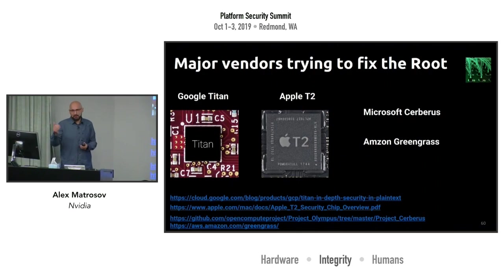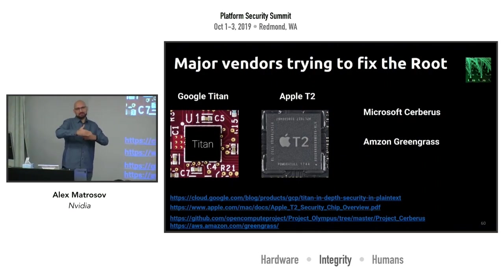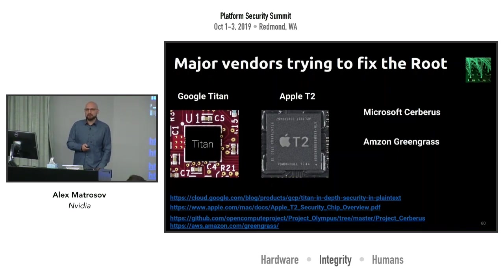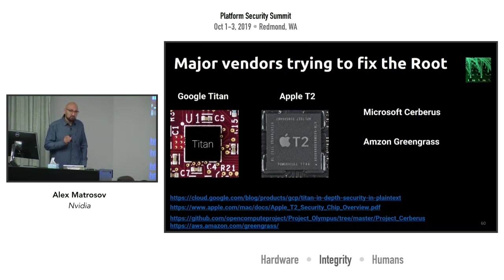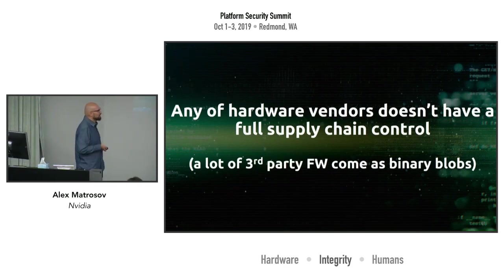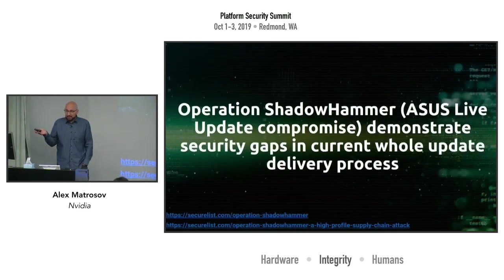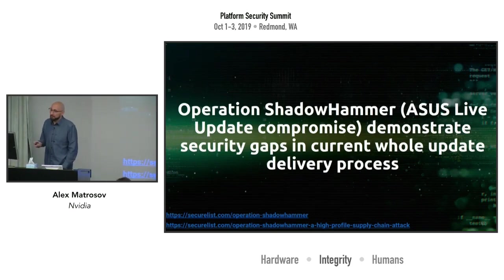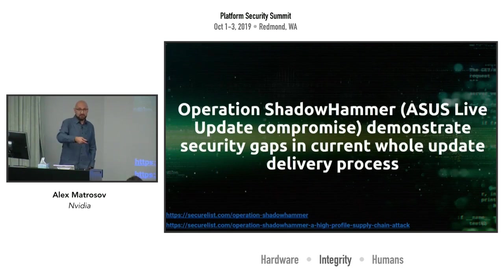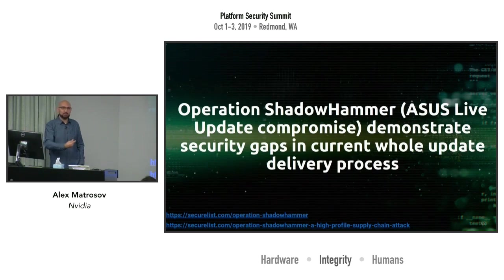Another problem: on many of these chips, most of the firmware is static — so it's unpatchable and requires a recall if something happens. Also, T2 is very interesting and great in many cases, but you never know. Any hardware vendor lacks full supply chain control, and third-party vendor firmware comes as binary blobs. Operation ShadowHammer — mentioned earlier this morning — compromised an update process on Asus Tech machines and was also used to deliver firmware. It's an interesting case where a unified vendor update process was compromised, meaning anything coming through it could be compromised.